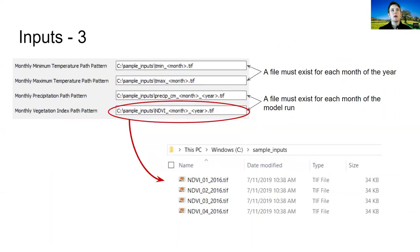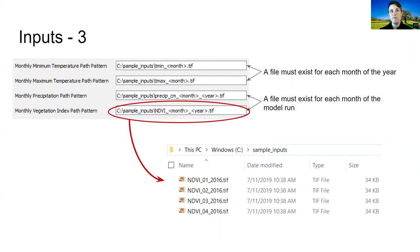The model requires monthly temperature, precipitation, and a vegetation index such as NDVI. We only need one month's worth of temperature data — for example, temperature data for January, February, March, April, etc. For precipitation, the model requires data for each month that the model simulates. For example, if you wanted to simulate 24 months, you would need to provide precipitation inputs for each of those 24 months. The same applies for the vegetation index — you would need to provide a vegetation index raster for each of those 24 months.